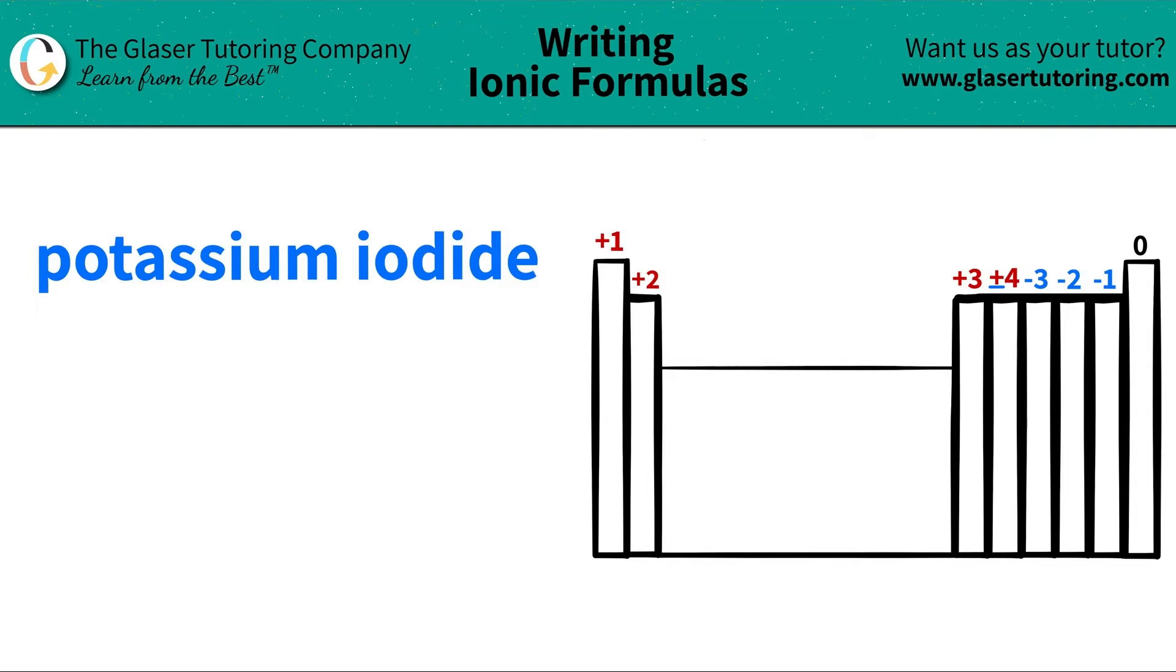Today we are going to be writing the formula for the ionic compound potassium iodide. Let's see where these elements are on the periodic table and then we'll take it from there.